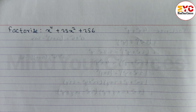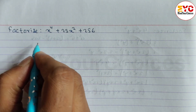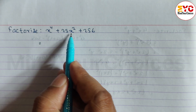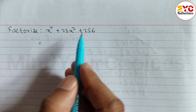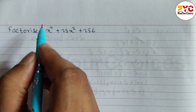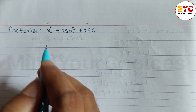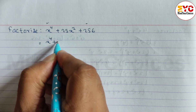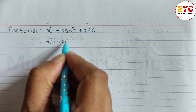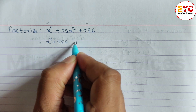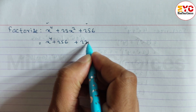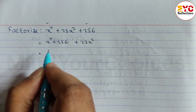In this video I will teach you how to factorize easily. We have the question x⁴ + 23x² + 256. In this type of question we take the first and last terms, so we write x⁴ + 256, and place 23x² at the end.